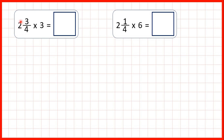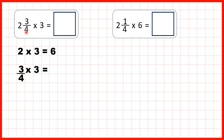Looking at the whole number first, 2 times 3 is 6. Then we can work out 3 quarters times 3 and add up our answers. But we need to be really careful here. When we multiply a fraction by a whole number, we only multiply the numerator, and the denominator stays the same.